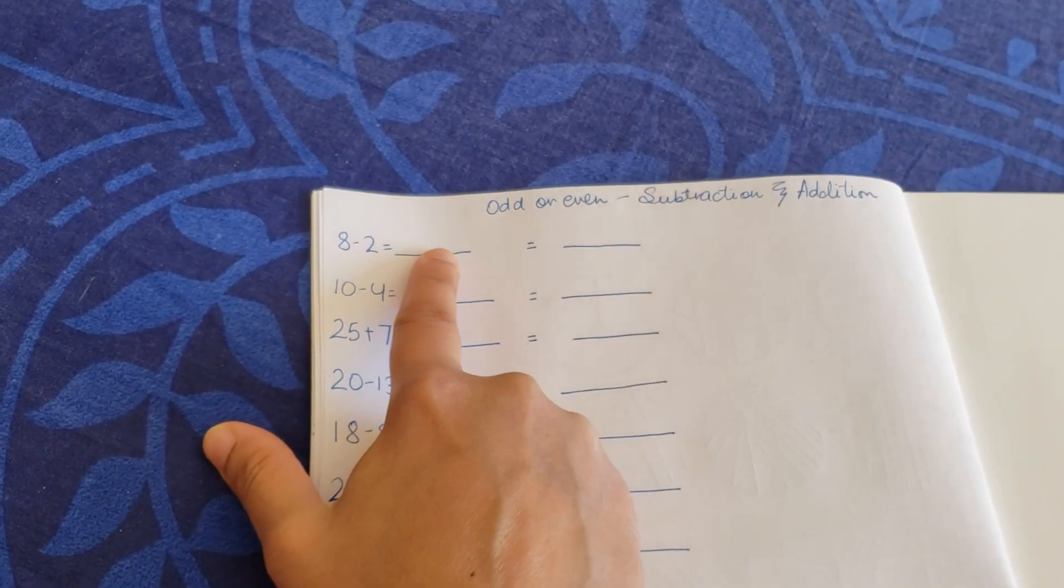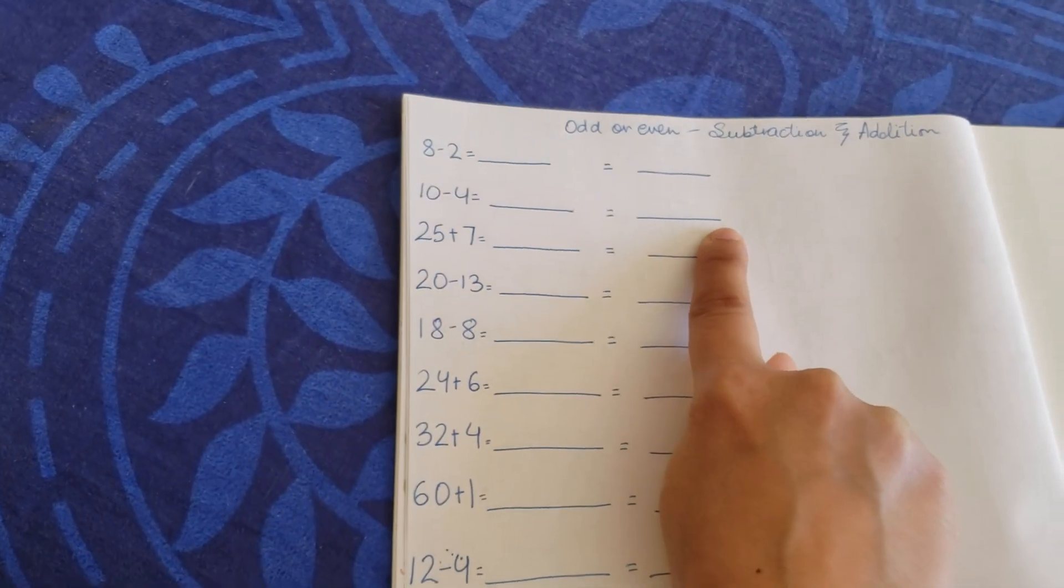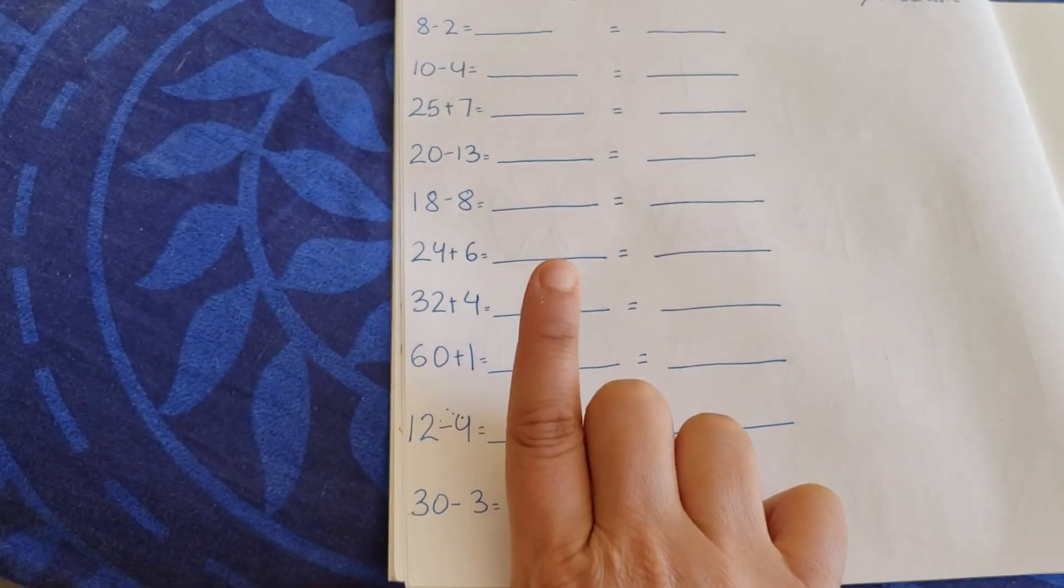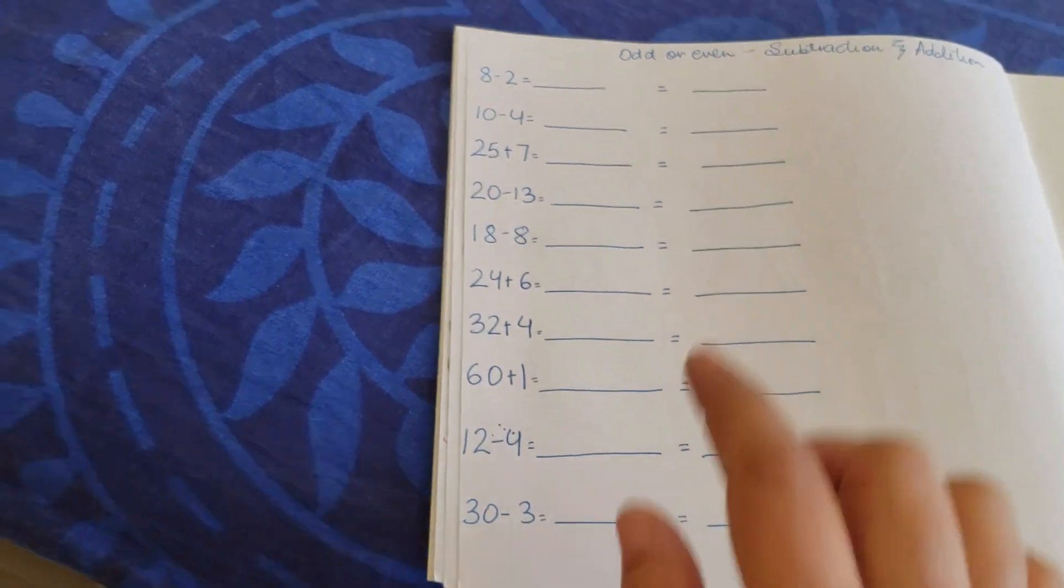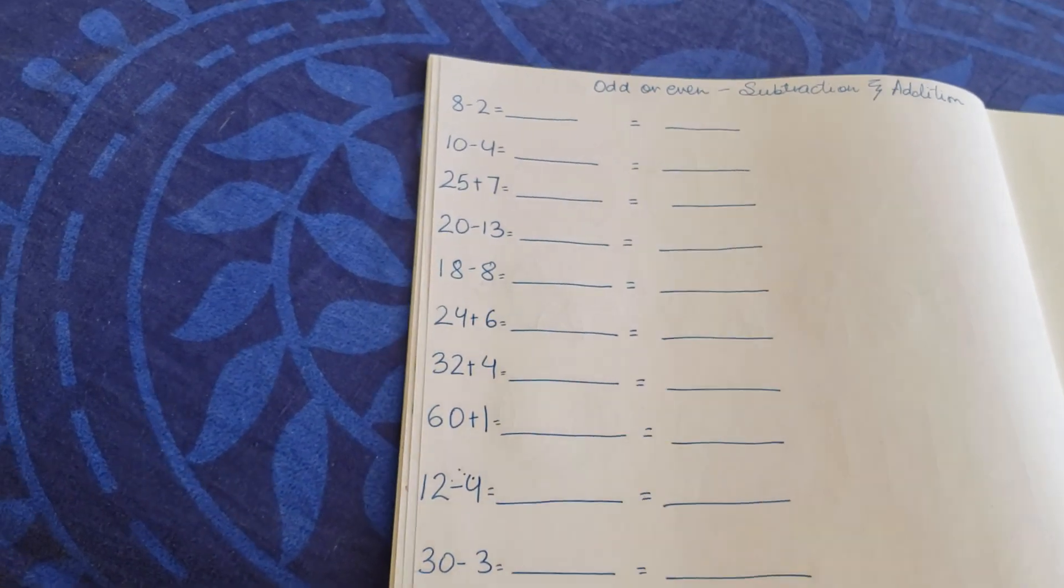Then you have odd or even subtraction and addition together. It's eight minus two. Whatever is the answer, is it odd or even? Ten minus four, whatever is the answer, is it odd or even? Thirty-two plus four, is it odd or even? You need to write the answer. First, thirty-two plus four, you have to write the answer, and then whether it's even or odd, you have to write the answer.